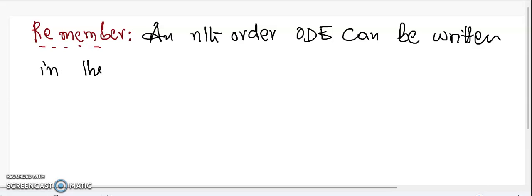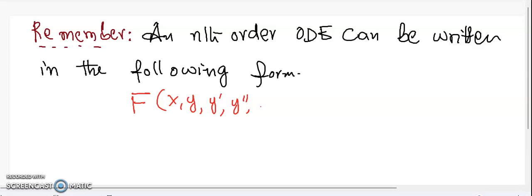An nth order ODE can be written in the following form: F(x, y, y', y'', ..., y^(n)) = 0, where F is a function of n+2 variables.